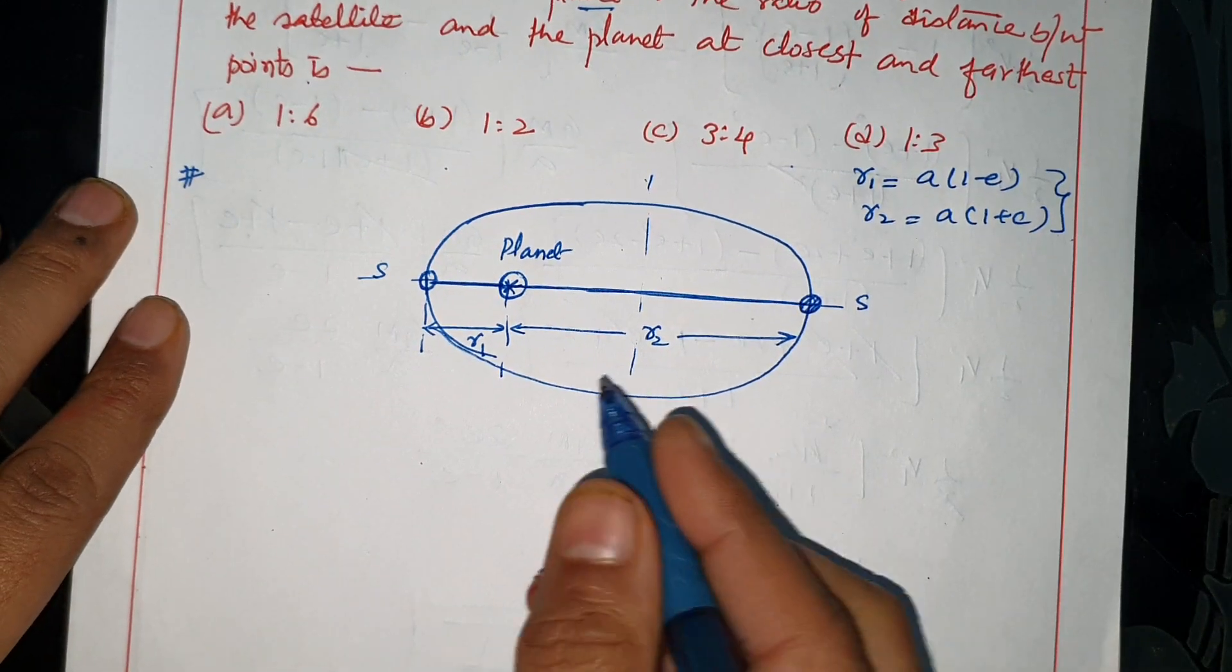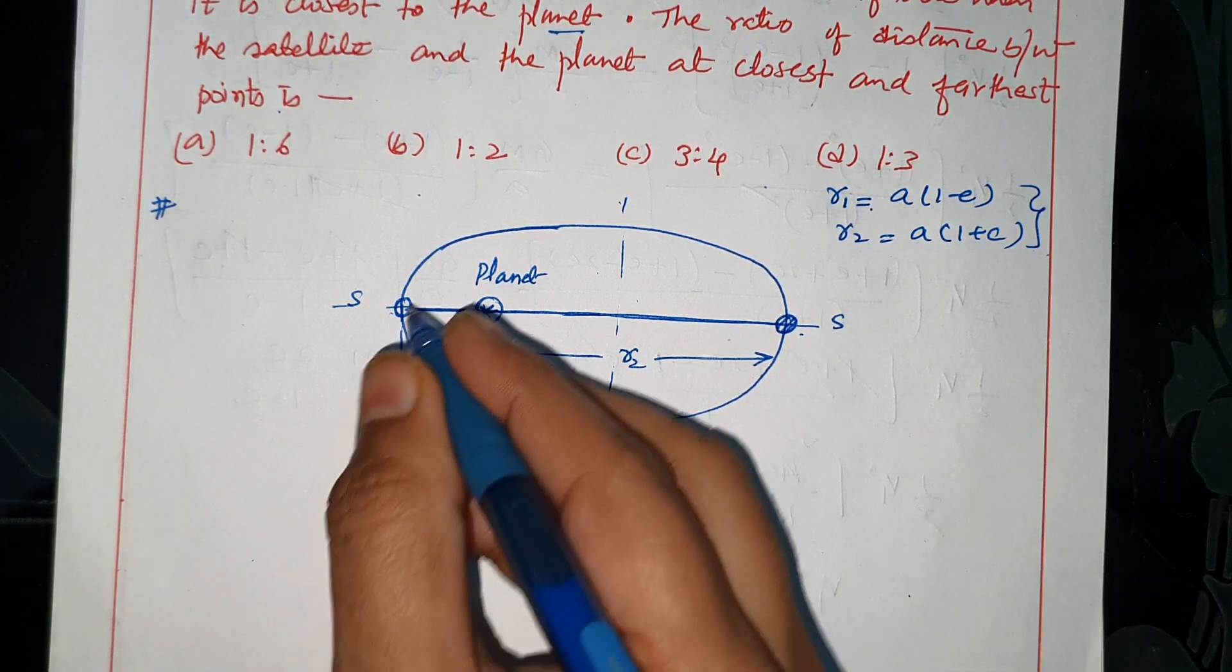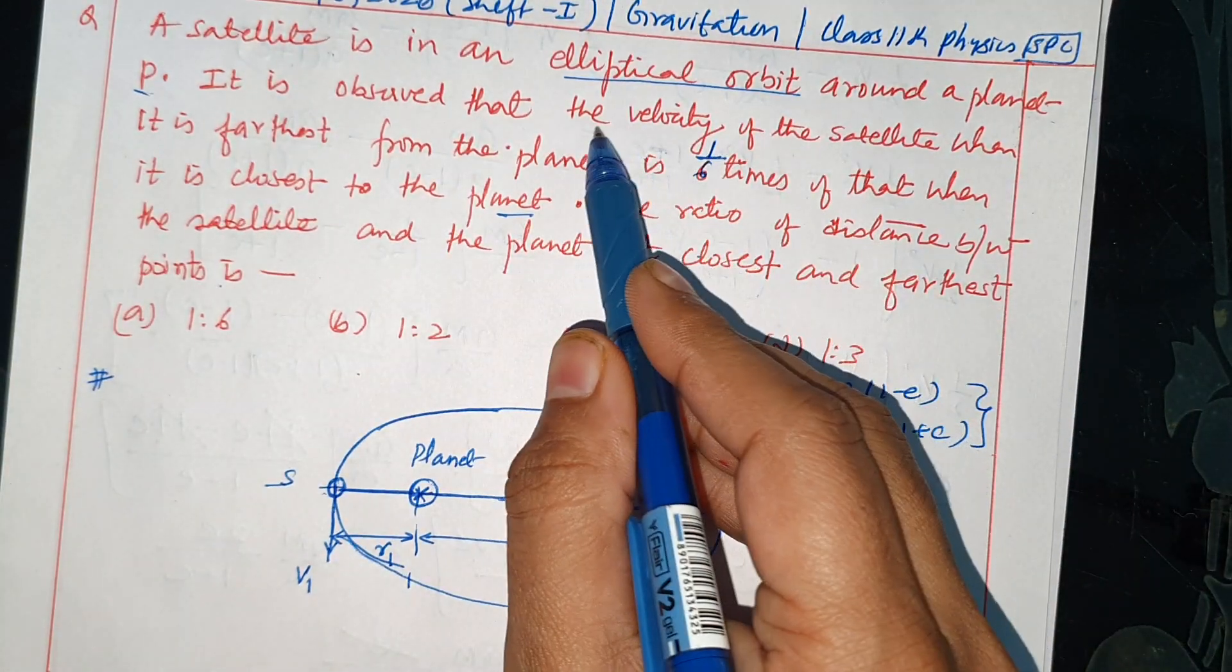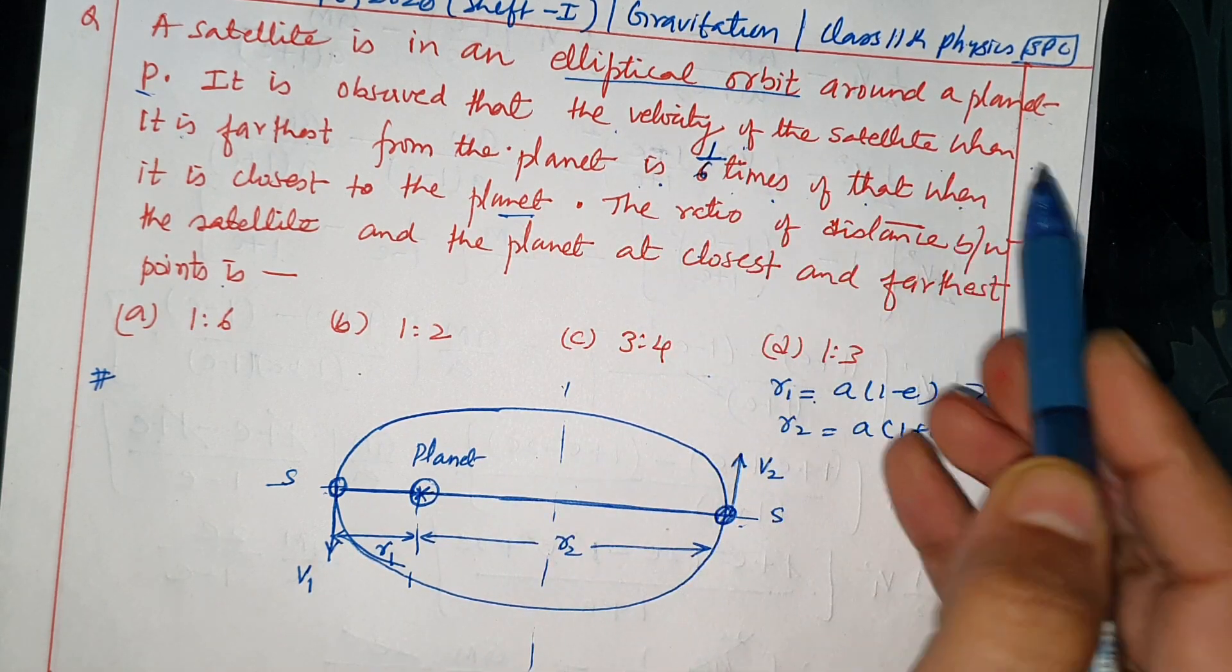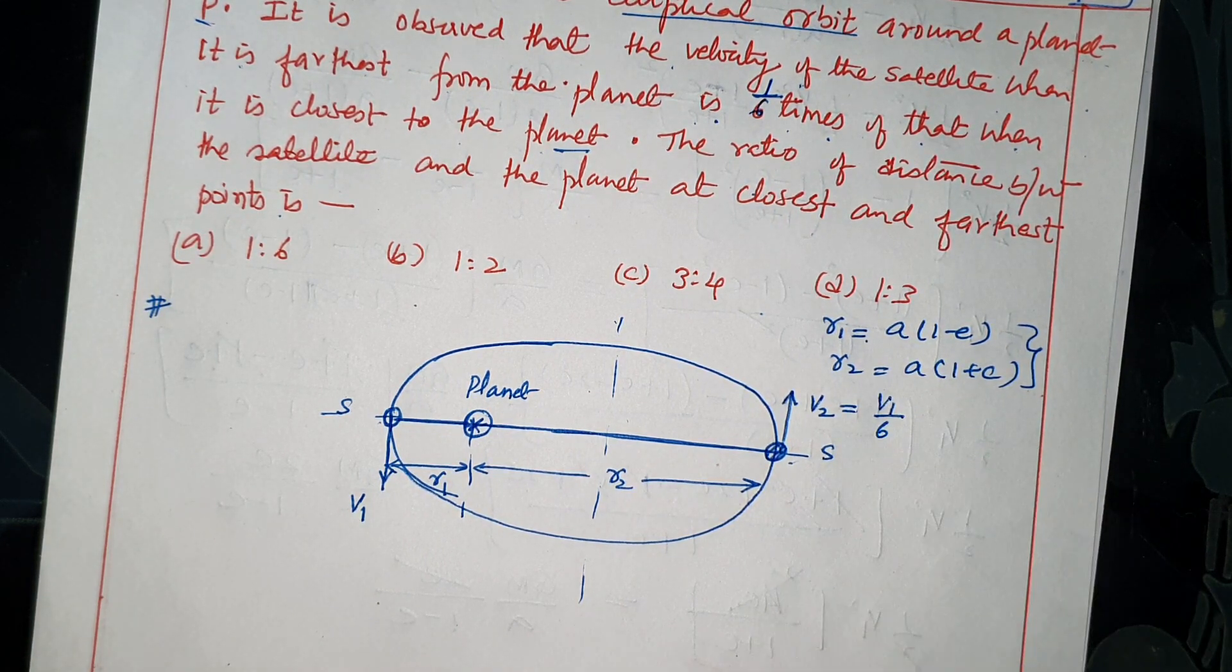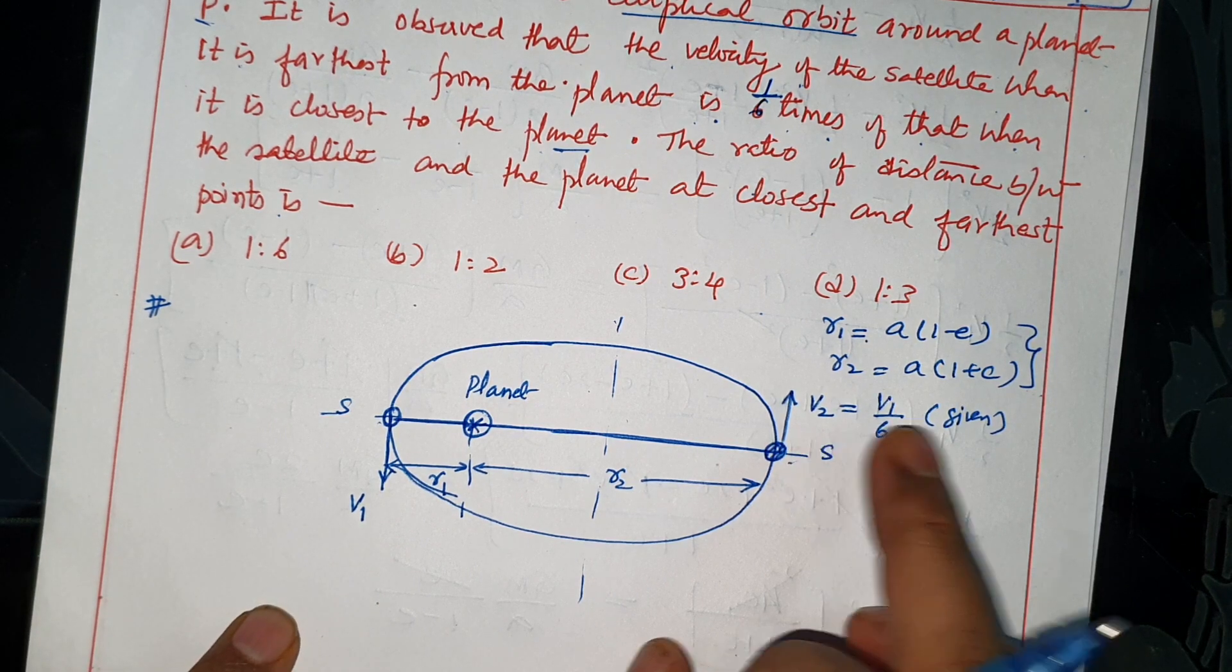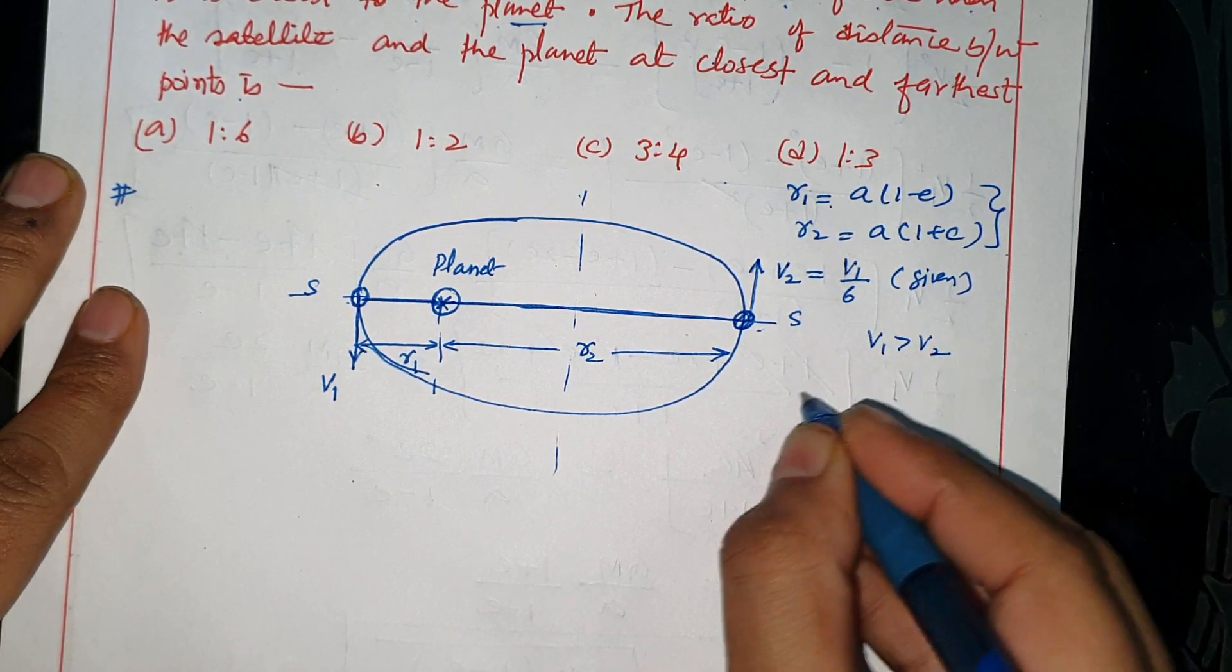Distance of a satellite - minimum distance and maximum distance. This is perigee and apogee. This is the velocity of a satellite and this is the question given. The velocity of a satellite when it is farthest from the planet is 1 by 6 times of that when it is closest to the planet. This is the velocity of a satellite given.